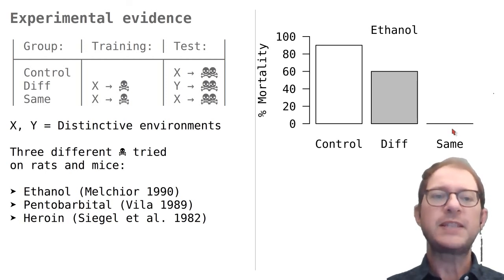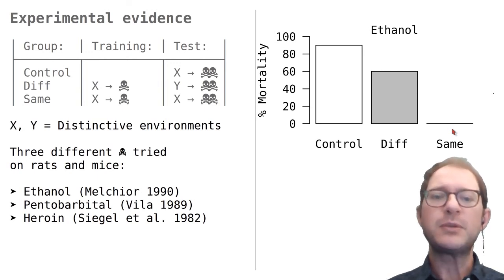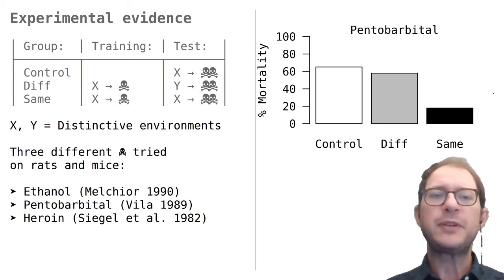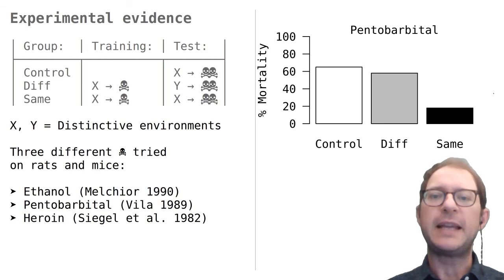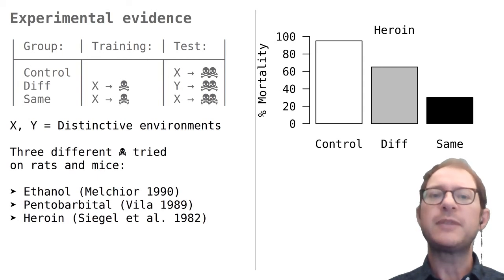This indicates that Pavlovian conditioning is an important part of tolerance. Being used to the small dose of alcohol saved only about 40% of the Different group animals — they were used to alcohol, but could not predict its delivery based on conditioned stimuli. Animals in the Same group were both used to alcohol and could predict it was coming, and no animals in this group died. For pentobarbital, the Different animals showed practically no protection from mere habituation to the drug, dying at similar rates to controls, but less than 20% of the Same group died. For heroin, almost all control animals died, more than 60% of the Different animals died, but only about 25% of the Same animals died.